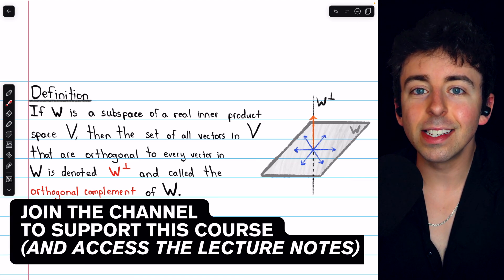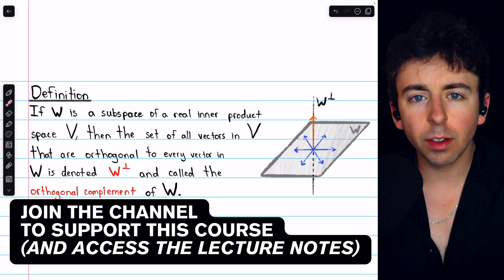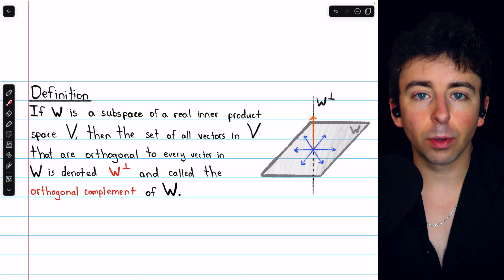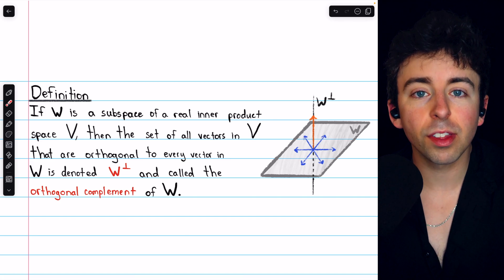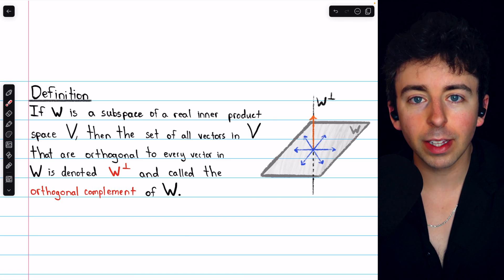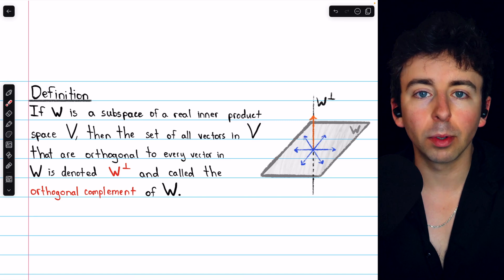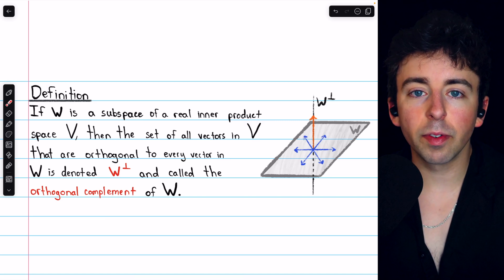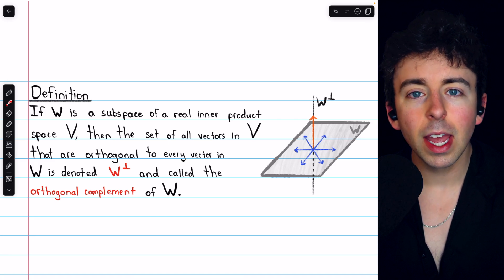We previously introduced the idea of an orthogonal complement when discussing the fundamental spaces of a matrix. For example, we discussed how the row space and the null space of a matrix are orthogonal complements. Now we're going to generalize that idea of an orthogonal complement to inner product spaces. We're going to go over the definition of orthogonal complements, prove some basic properties of them, and see an example.